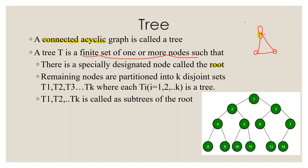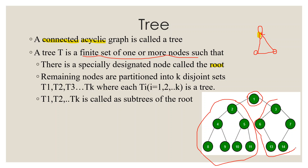Let me show you an example of a tree. If we look at this, we have a node here that is the root node. The root node is distinguishable from other nodes — it is a specially designated node. This is the root node, and these other nodes are part of the subtrees. The root node has children, and together these form the tree structure.